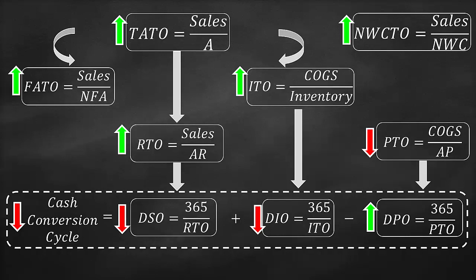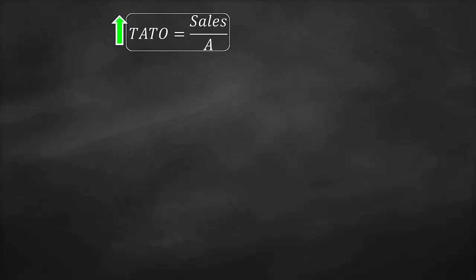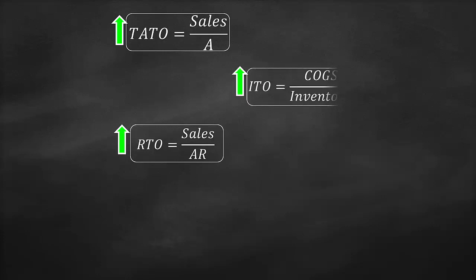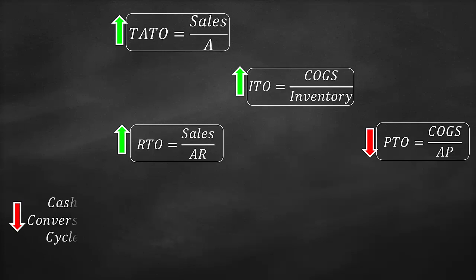Let's have an example of how to express the relationship among the different ratios. In order to increase the total asset turnover ratio, we should increase the receivables turnover ratio, increase the inventory turnover ratio, decrease the payables turnover ratio, and decrease the cash conversion cycle. We can include all the ratios, but this is a quick example.